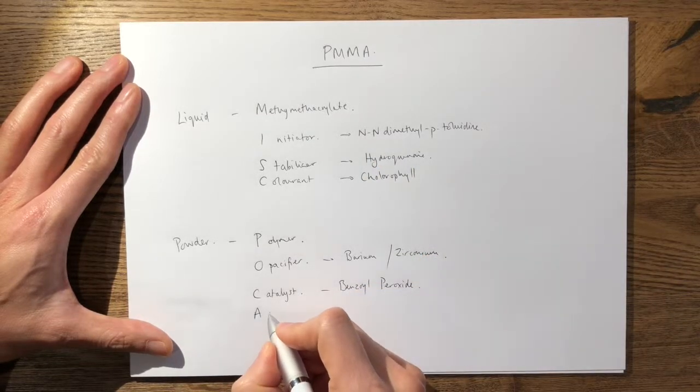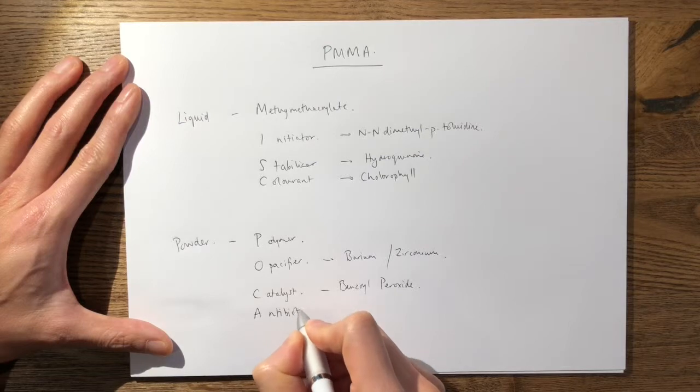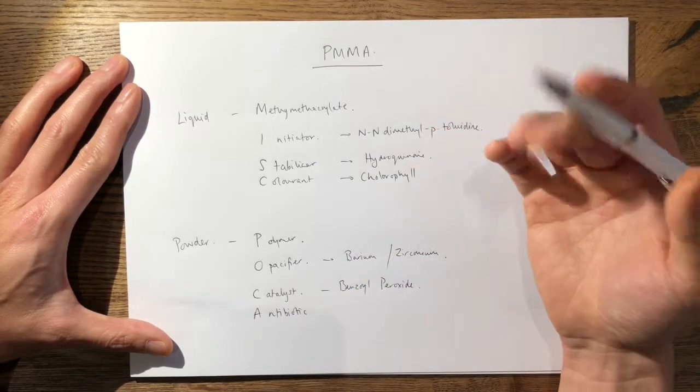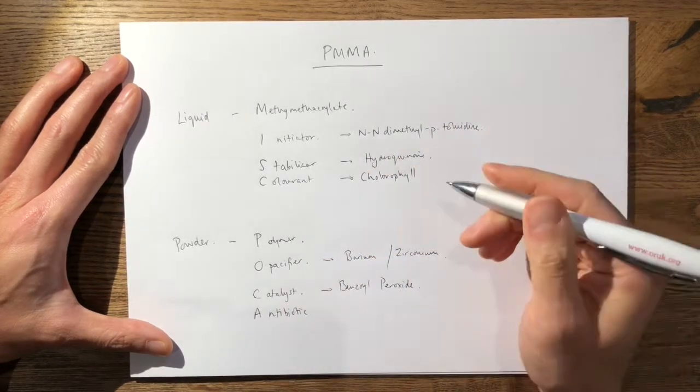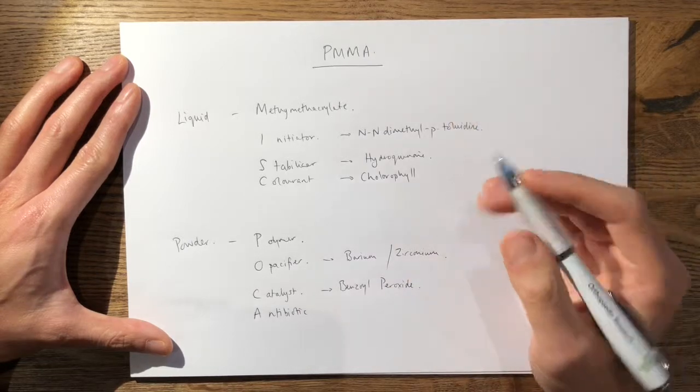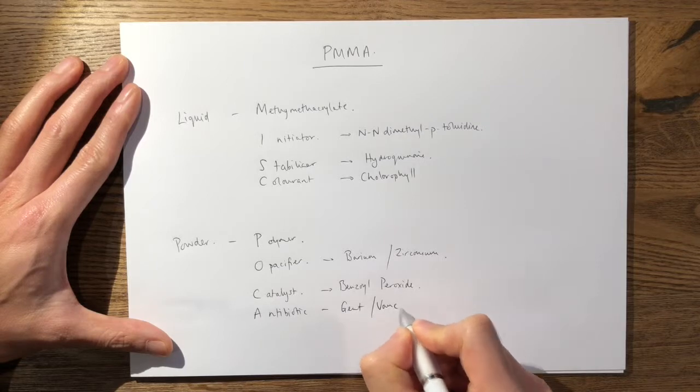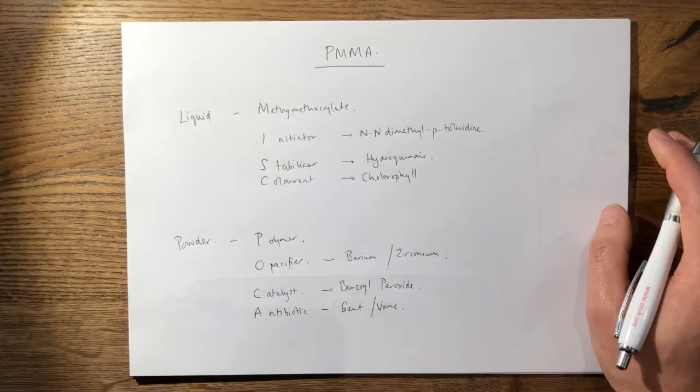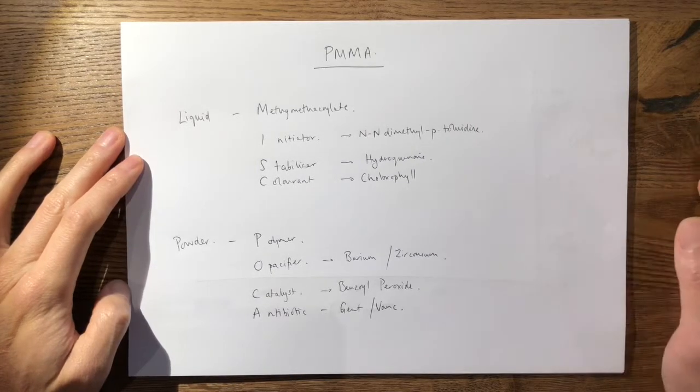A is your antibiotics. Commonly antibiotics have to be heat stable and they have to be able to reach a local therapeutic concentration. Most commonly we use gentamicin or vancomycin. So this is the composition you need to know at the very basic level.